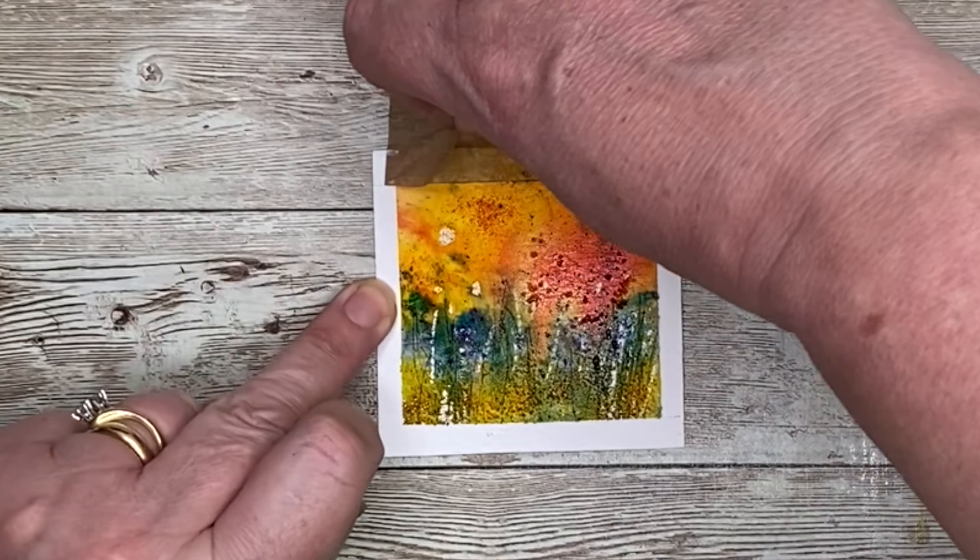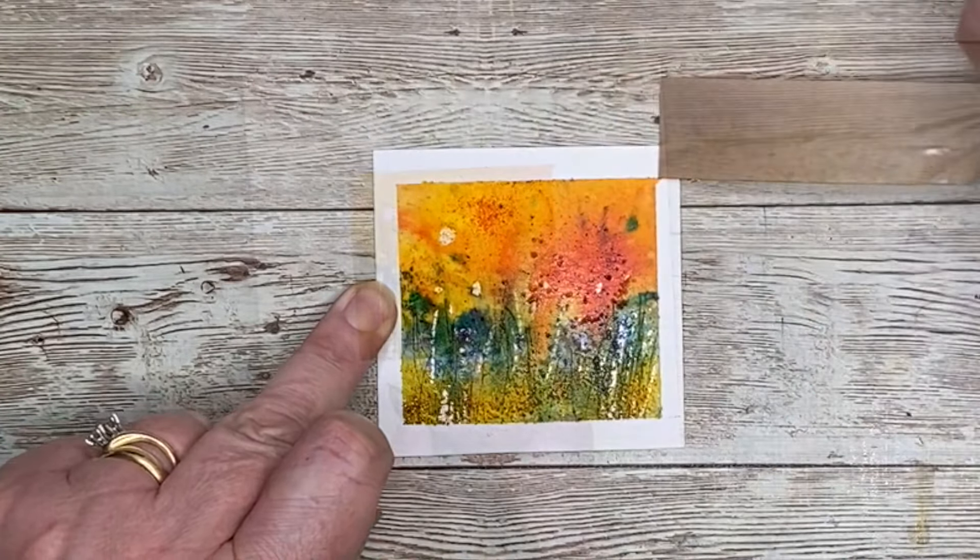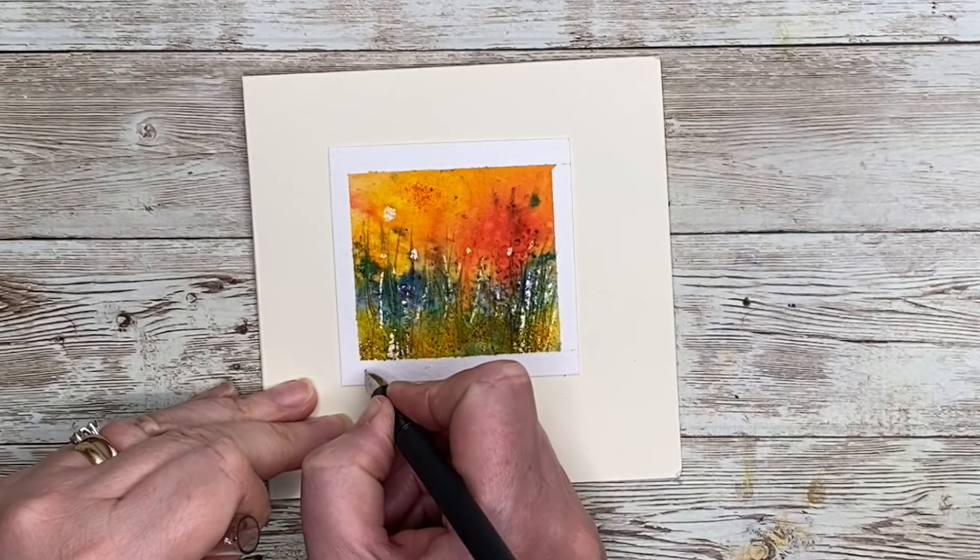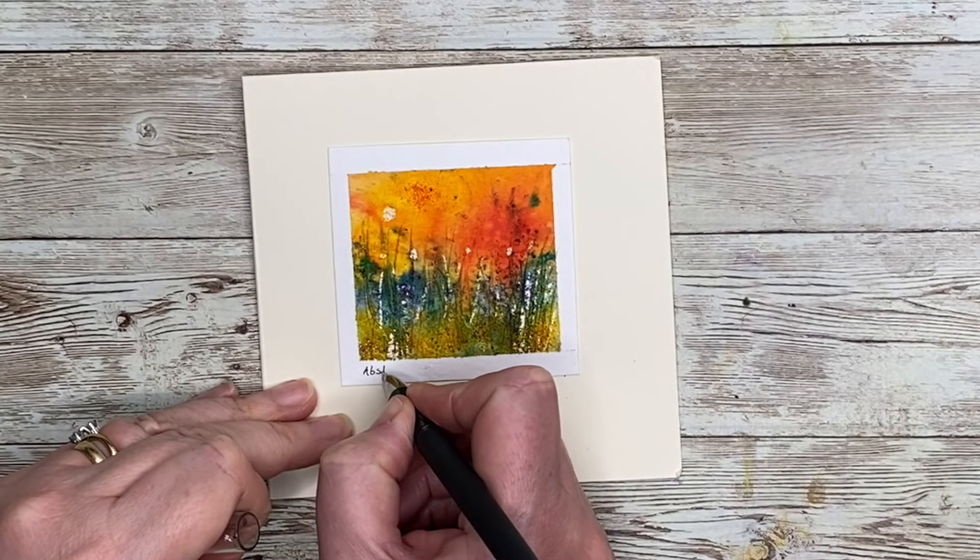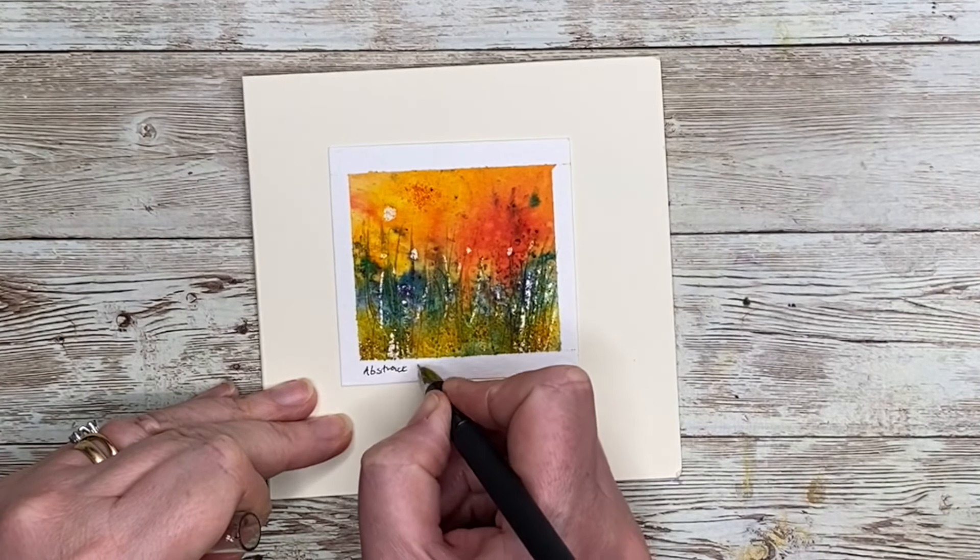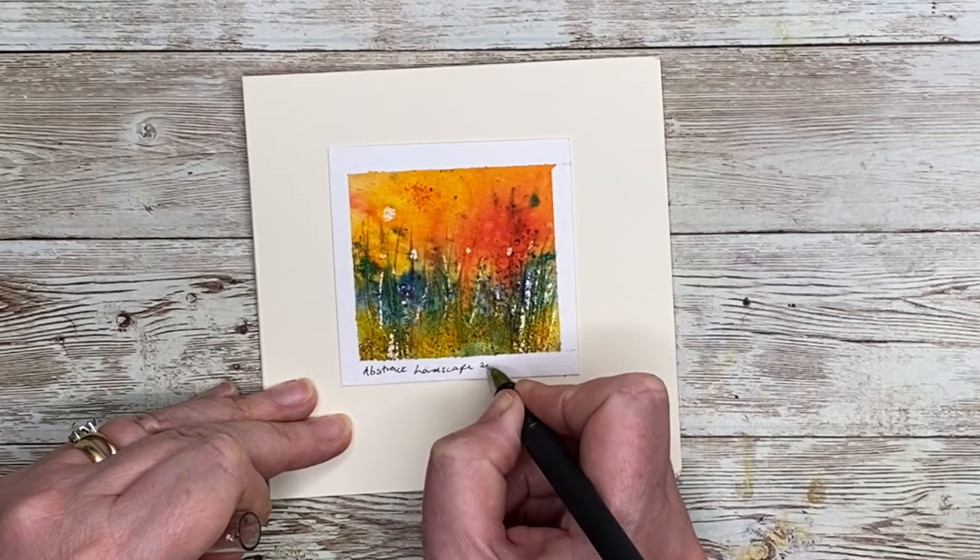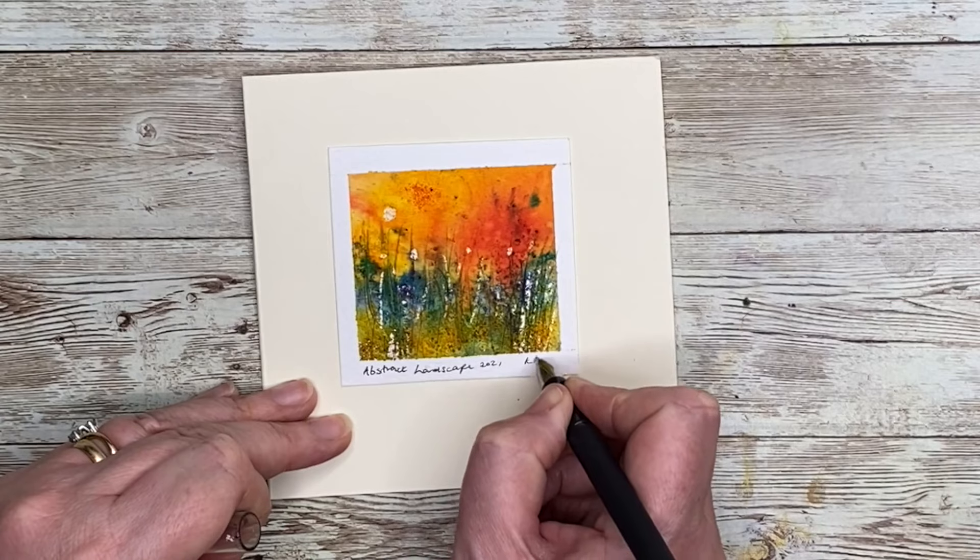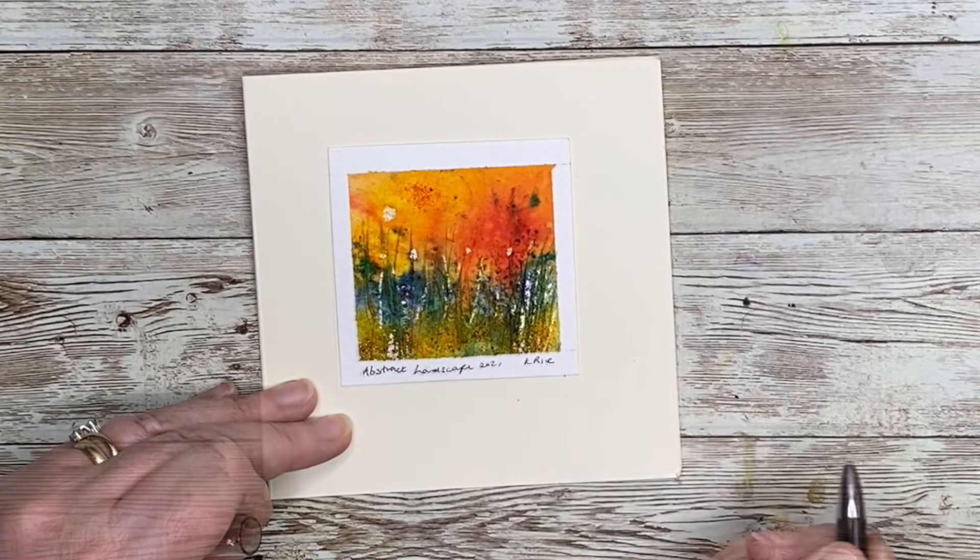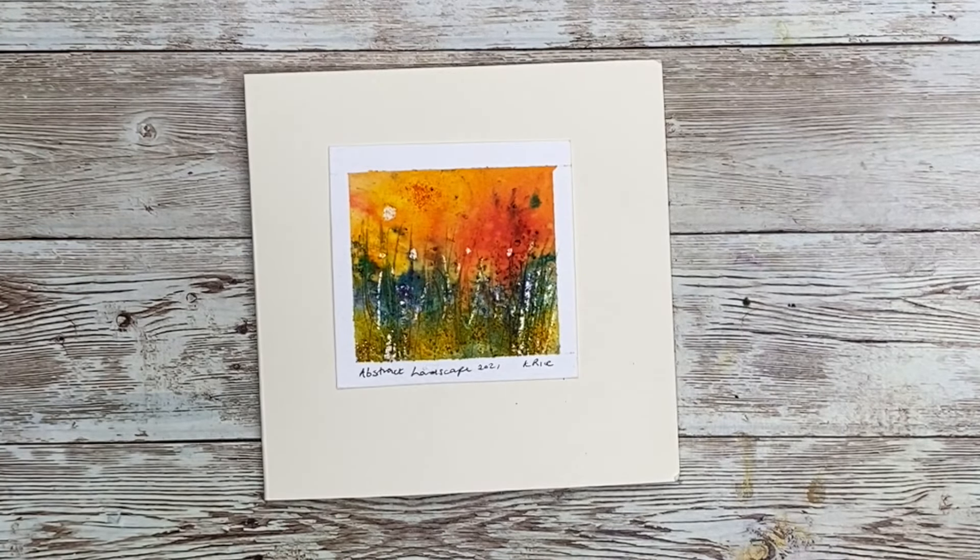And I've finished off by removing my framing tape. And there's a lovely white border. And of course, I'm going to give my painting a title, abstract landscape, give it a date and sign it. And I've used a ready made greeting card there, blank card. And I stuck my painting on with some Pritt stick. But you could use watercolor paper folded or some thick card.